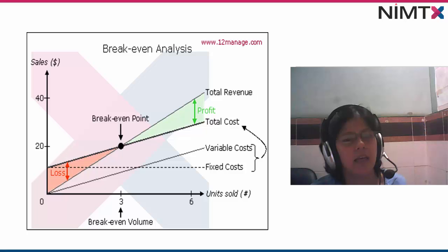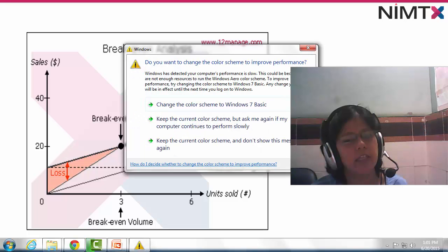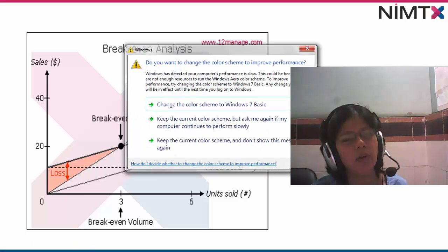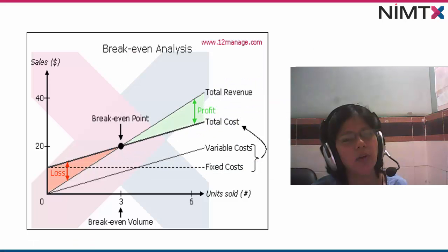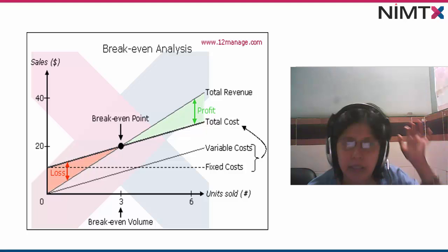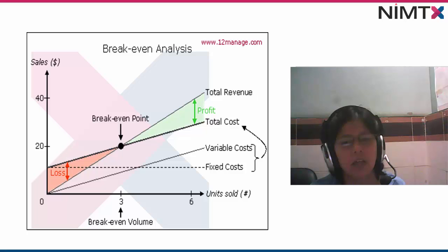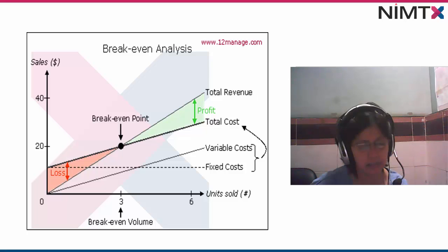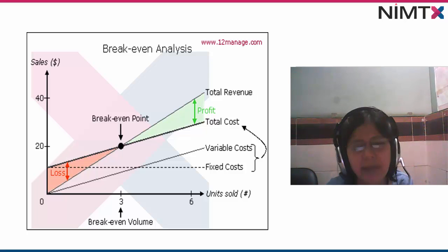Now let's look at the graph of breakeven analysis. On the x-axis we have sale and breakeven volume — unit sales — with values such as 0, 20, and 40 dollars, and 3 to 6 units on the panel, representing the products we are selling.